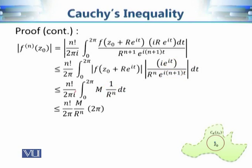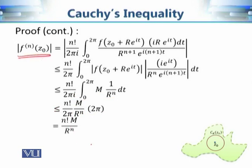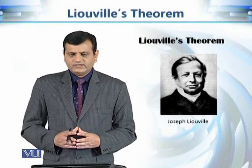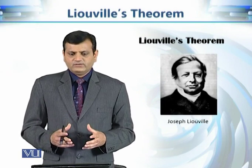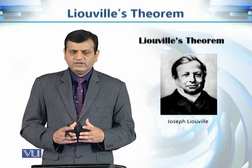Since M and 1/r^n are constants, the integral from 0 to 2π of dt equals 2π, and the 2π cancels. So we obtain that the modulus of the nth derivative at z₀ is less than or equal to n! · M over r^n. That is Cauchy's inequality, giving us an upper bound on the nth derivative of a complex valued function at any point z₀, subject to the stated conditions.